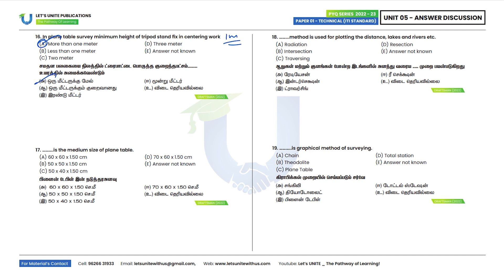Seventeenth question: What is the medium size of a plane table? The medium size is 50 × 50 × 1.5 cm. Option B is the correct answer.